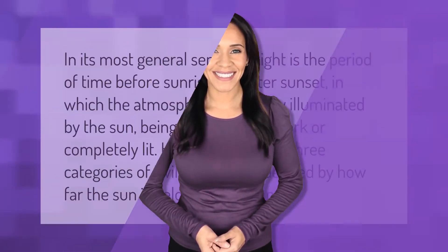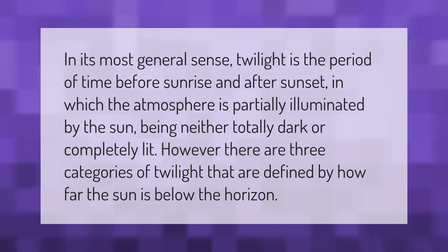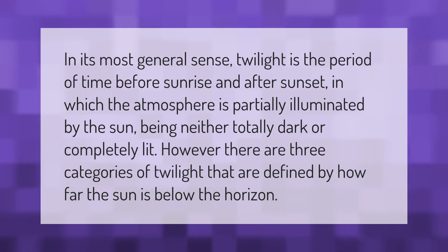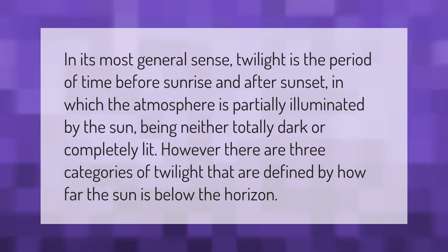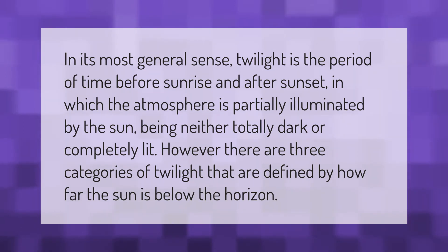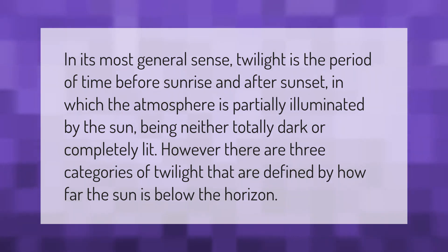In its most general sense, twilight is the period of time before sunrise and after sunset in which the atmosphere is partially illuminated by the sun, being neither totally dark nor completely lit. However, there are three categories of twilight that are defined by how far the sun is below the horizon.